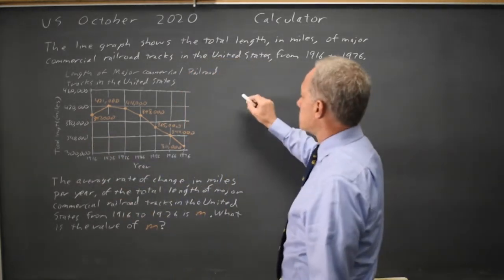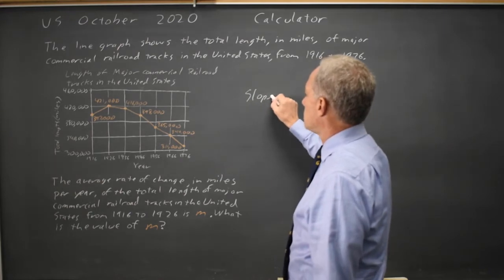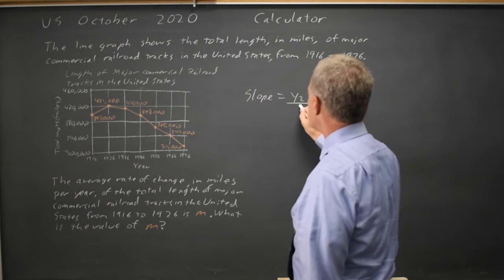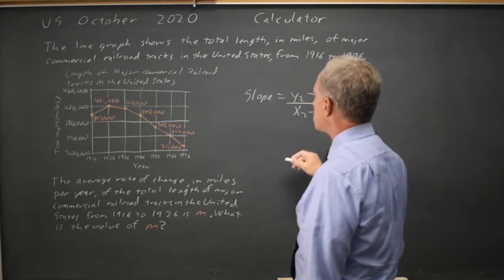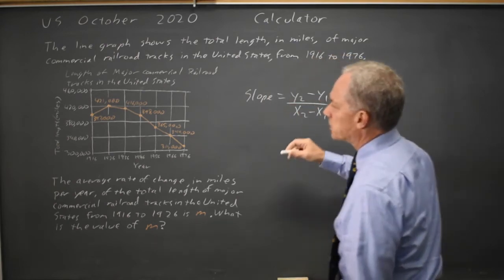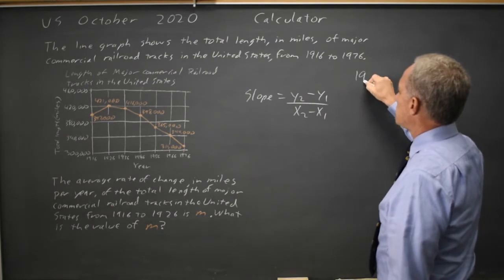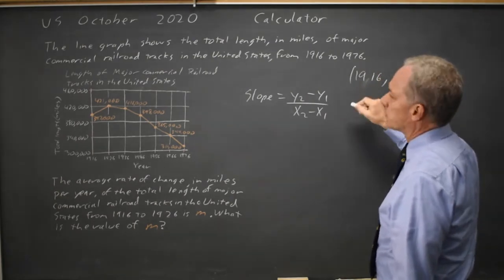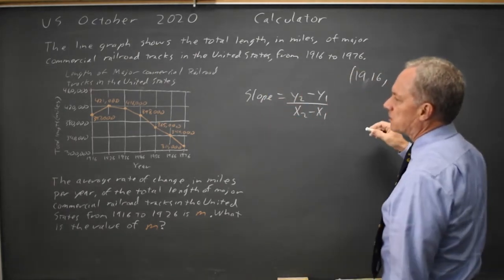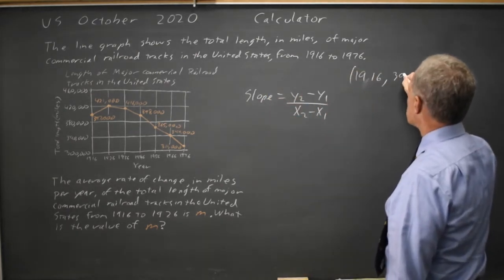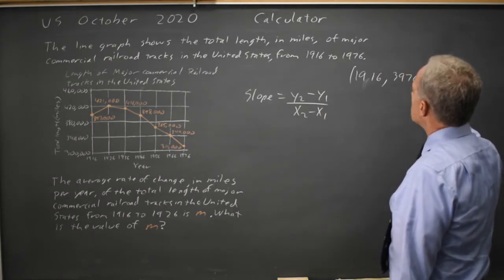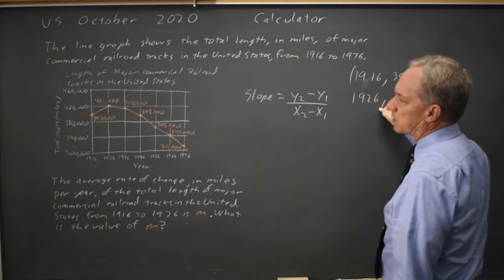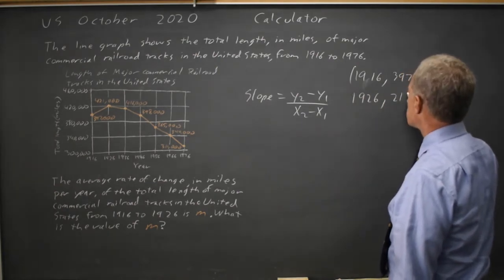Slope equals y2 minus y1 over x2 minus x1, where the first point is 1916, there's no comma there, and 397,000, and the second point is 1926 and 421,000.